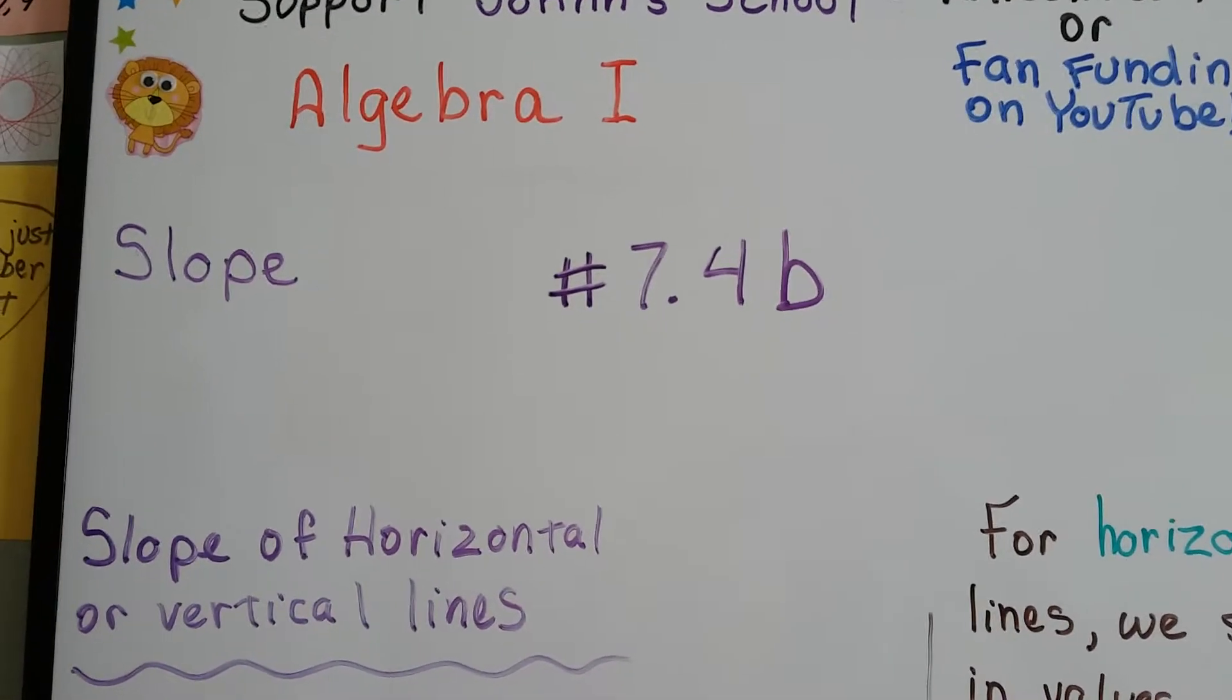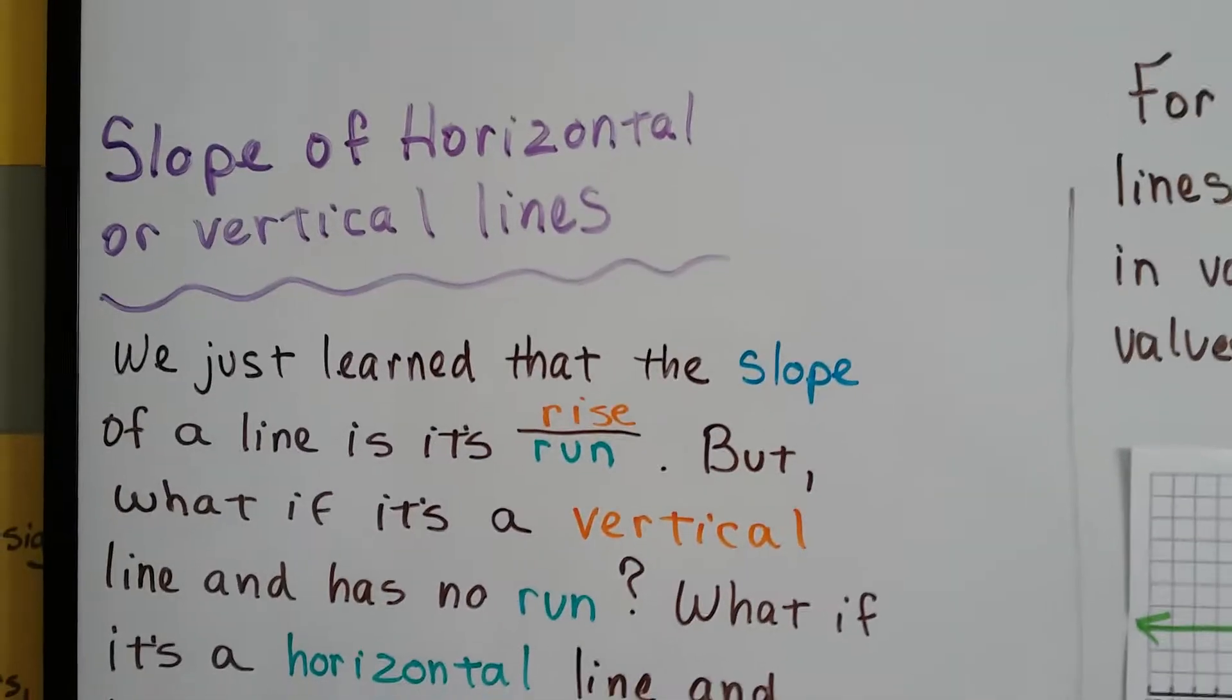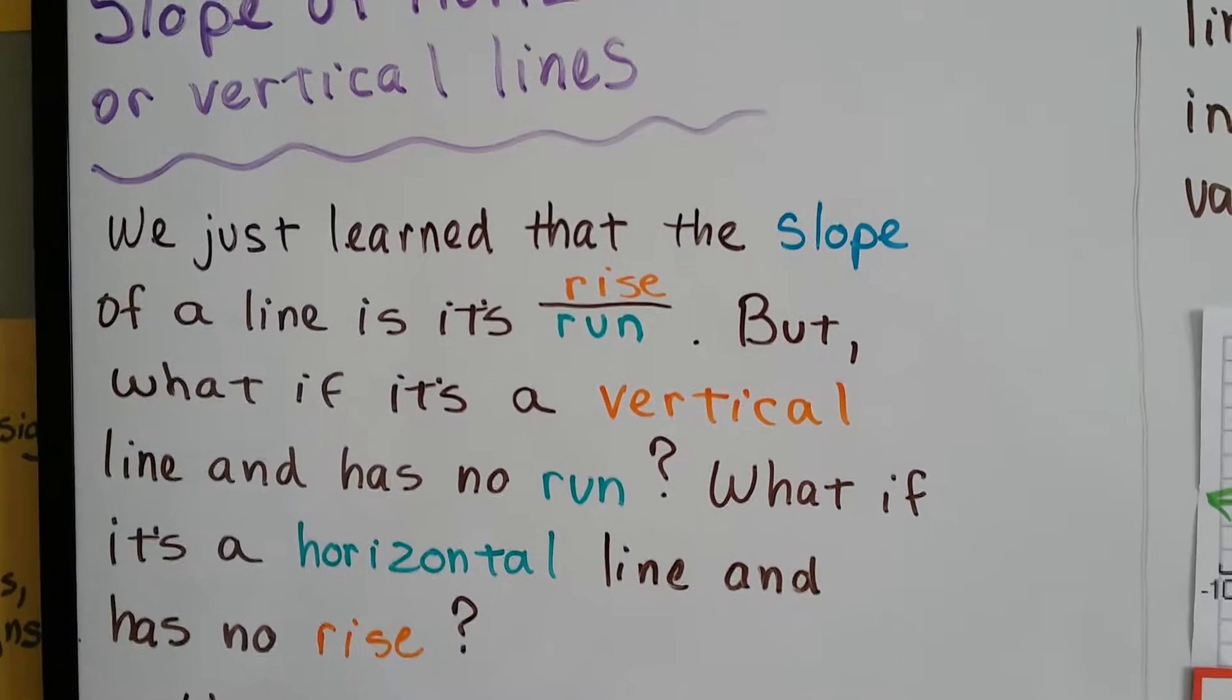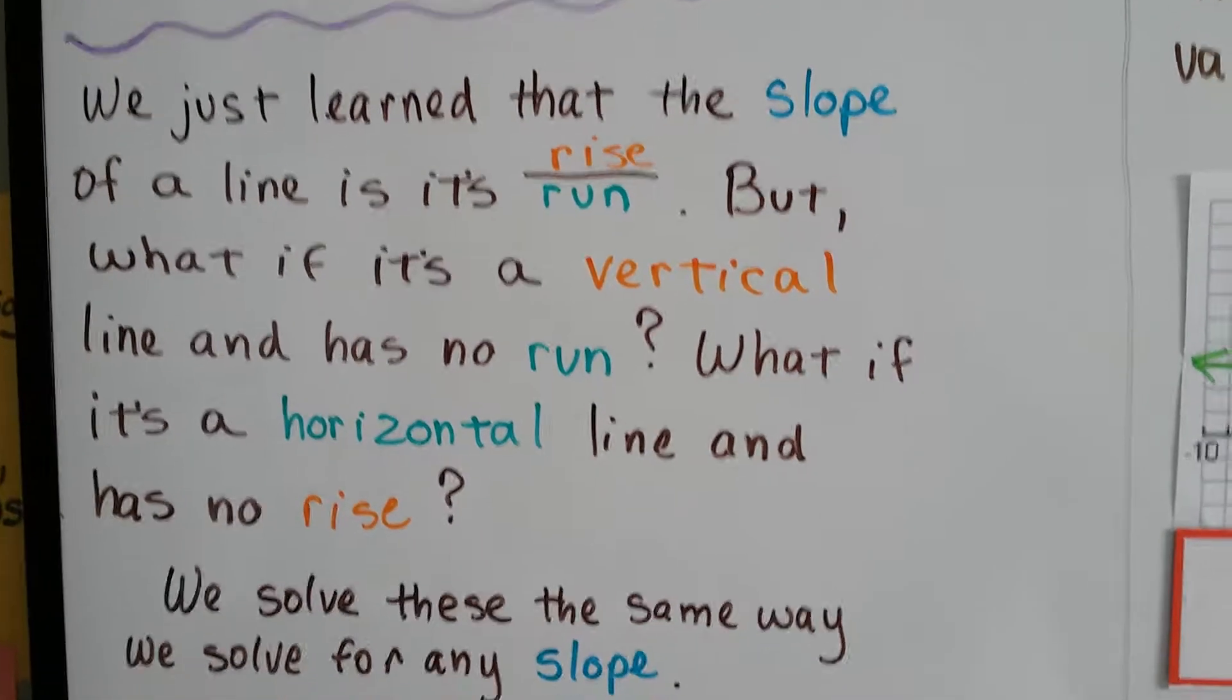Slope of horizontal or vertical lines? That's 7.4b. We just learned that the slope of a line is its rise over run, but what if it's a vertical line and has no run? What if it's a horizontal line and has no rise?